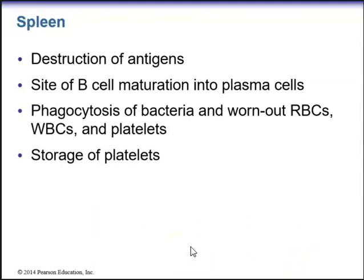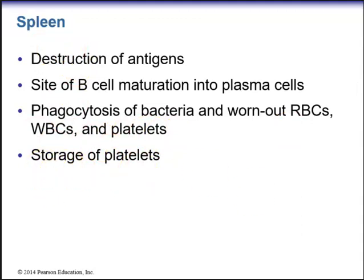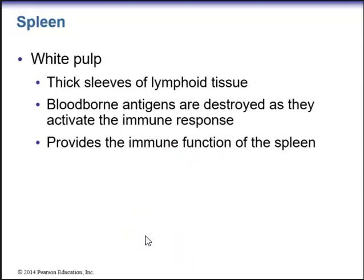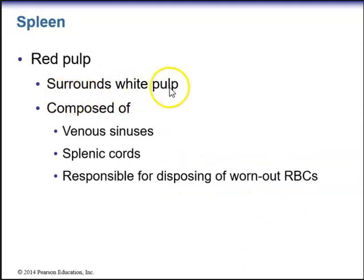In the spleen, we have destruction of antigens and it is a site of B cell maturation into plasma cells. We also have phagocytosis of bacteria and worn-out RBCs, WBCs, and platelets, and the spleen is also a site for storage of platelets. The spleen has two types of pulp: the inner white pulp consists of thick sleeves of lymphoid tissue where blood-borne antigens are destroyed and the immune response is activated. The red pulp surrounds the white pulp, is composed of venous sinuses and splenic cords, and is responsible for disposing of worn-out RBCs.